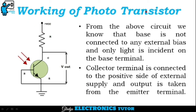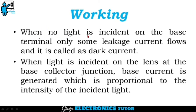Let's see about the working of a phototransistor. From the above circuit, we know that the base is not connected to any external bias and only light is incident on the base terminal. The collector is connected to the positive side of the external supply and the output is taken from the emitter terminal. When no light is incident on the base terminal, only some leakage current flows and it is called dark current. When light is incident on the lens, at the base-collector junction, base current is generated which is proportional to the intensity of the incident light.